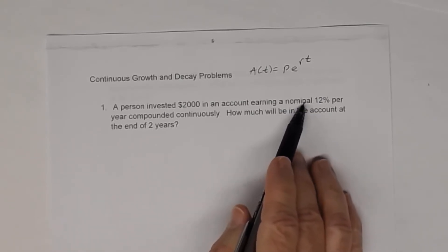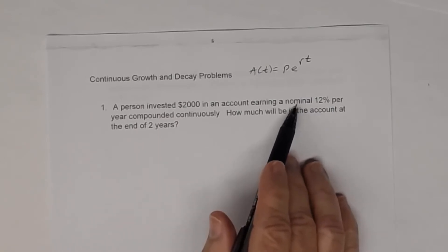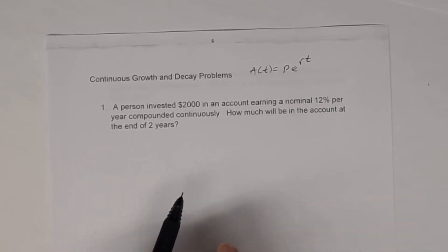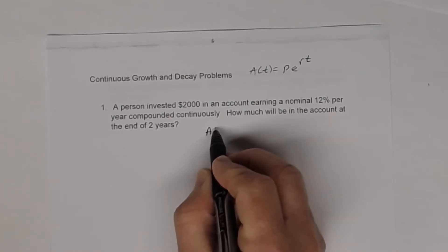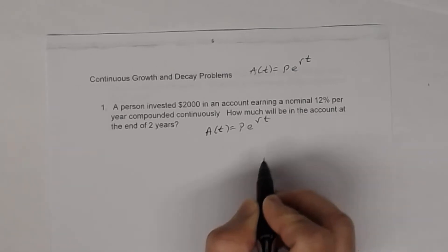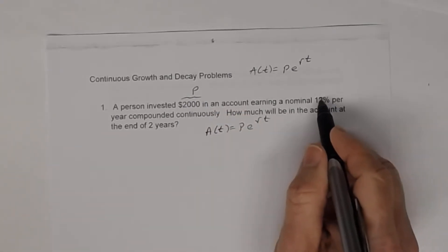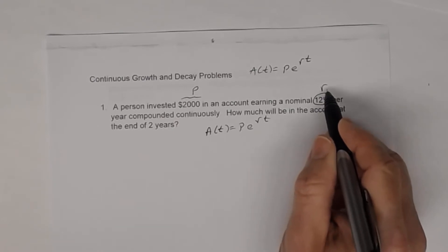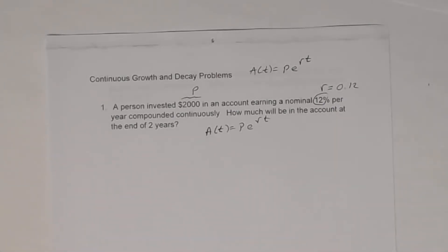So the nominal rate just means the interest rate without taking inflation into account. The 12% per year is what's important. The formula is A(t) = P times e to the rt. The principal is $2,000, and the rate is 12% which must be written as a decimal: 0.12. Make sure you always convert percent to decimal.